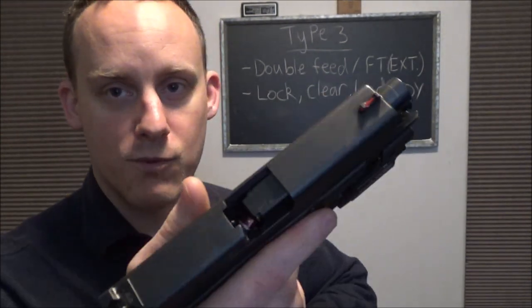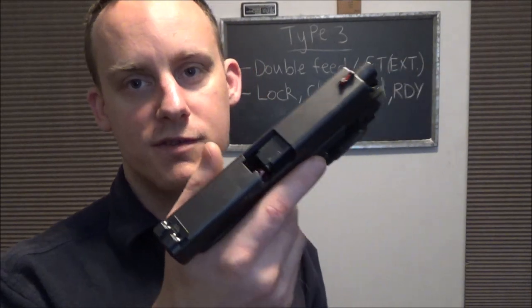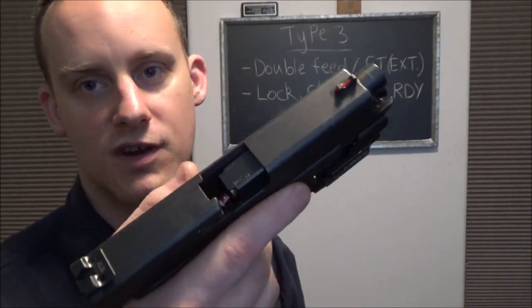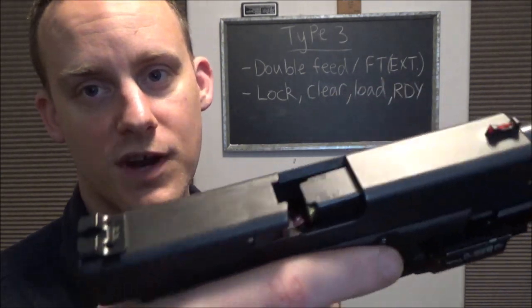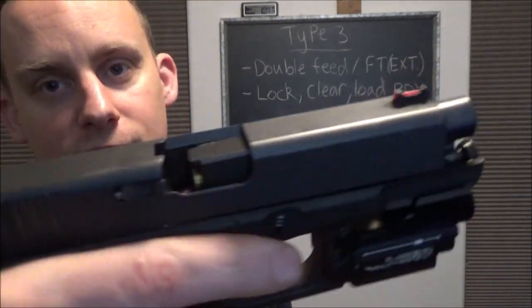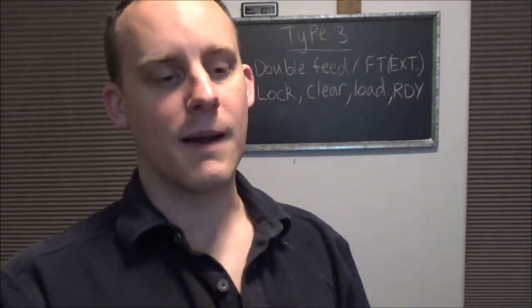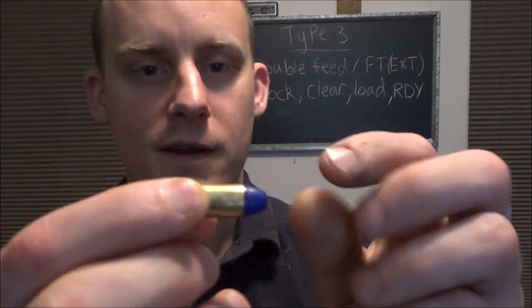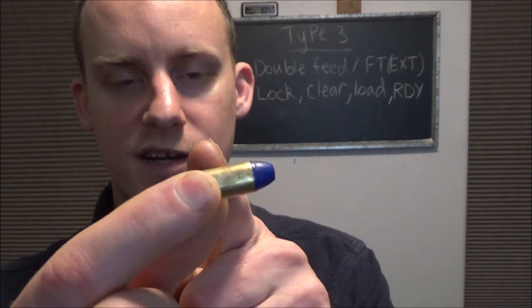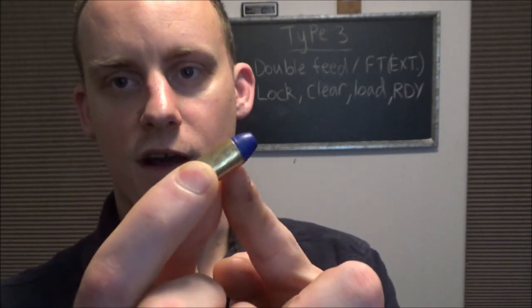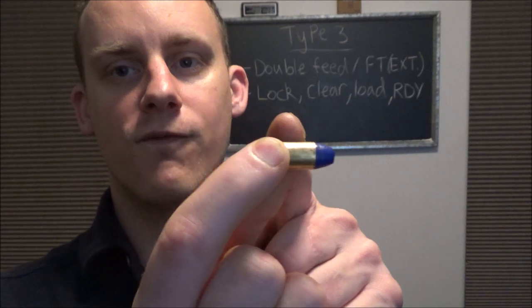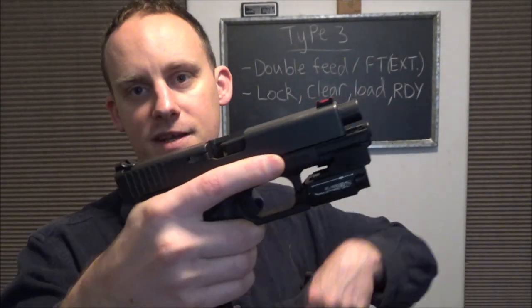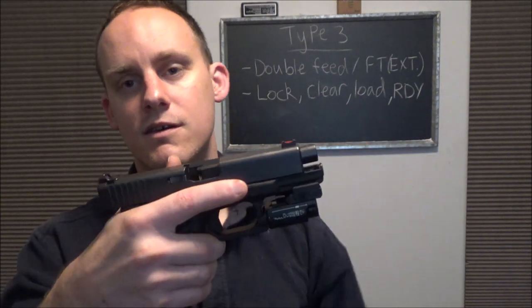So what happened here, this is one of the most common ways that you'll see a failure to extract. People will look at this and be like, oh it's just a failure to go into battery. No, this is a failure to extract. Look how far out of battery this is. So what happens here is it only makes contact with about half of the round. And so since it has an upward tilt to it, it still tries to go forward a little bit. And that's what ends up happening. It goes forward a little bit, jams up against the feed ramp.